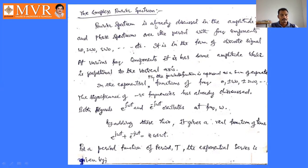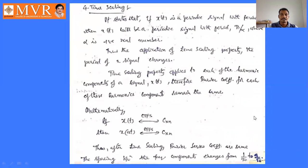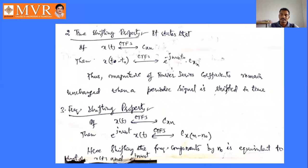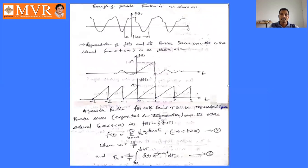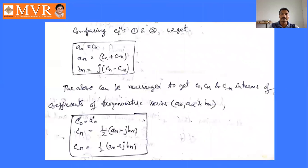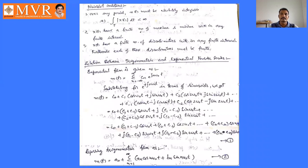We also discussed the Dirichlet conditions. There are three different conditions: first, the integral of x(t) must be finite over any finite interval; second, x(t) must have a finite number of maxima and minima within any finite interval; third, x(t) must have a finite number of discontinuities within any finite interval, and those discontinuities must also be finite.